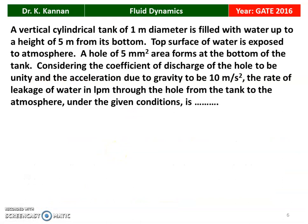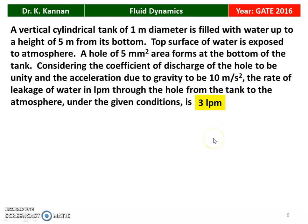The next question from the 2016 question paper: a vertical cylindrical tank of 1 meter diameter is filled with water up to a height of 5 meters from its bottom. The top surface is exposed to atmosphere. A hole of 5 mm square area forms at the bottom of the tank. Considering the coefficient of discharge to be unity and g equal to 10 m/s², the rate of leakage in LPM through the hole is 3 LPM. We will see how in the next slide.